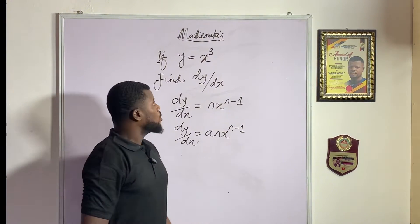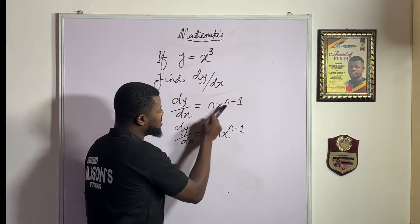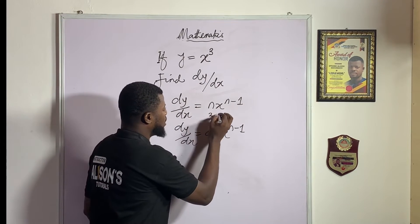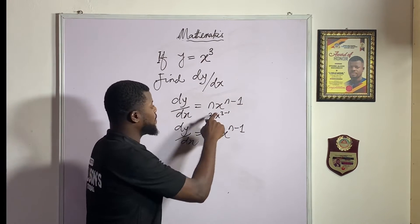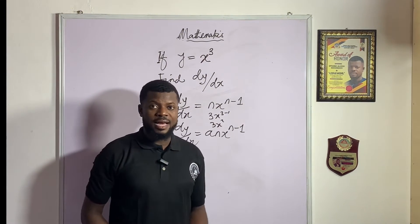But smartly you can just fix the answer without solving. Look at the power we're having here, three, meaning that wherever you see this n, substitute the three. So just imagine I just fixed three here, x, and I have three here minus one. Do you know that three minus one is two? So the answer becomes three x squared, as simple as that.